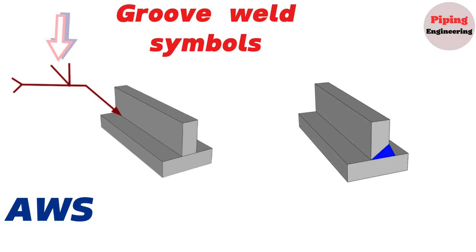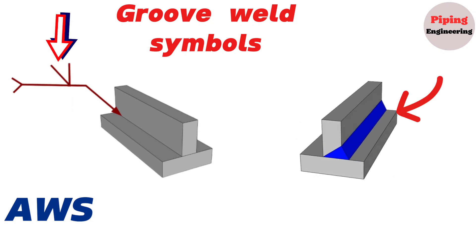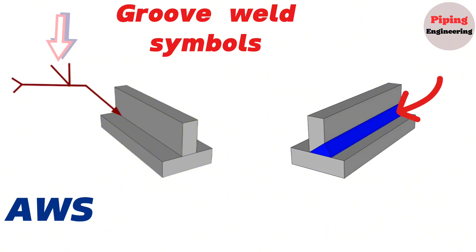If the groove welding symbol is showing above side of the reference line, the weld is carried out on the opposite side, far side of the joint.